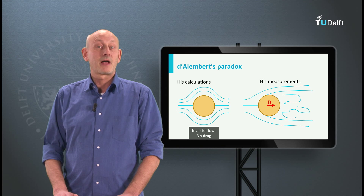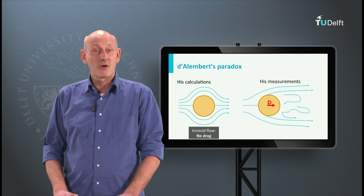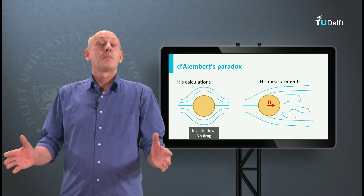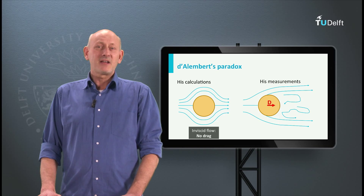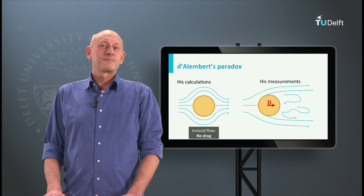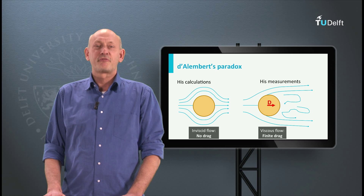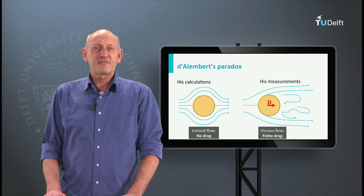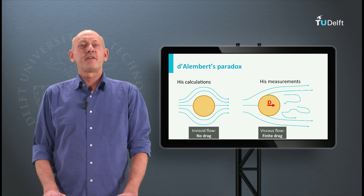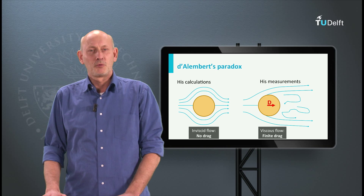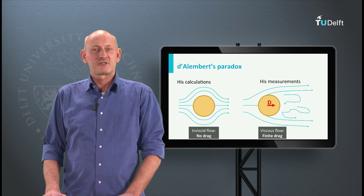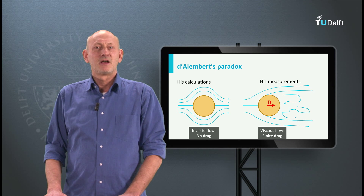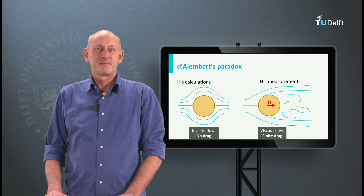So he knew that his calculations were wrong. But why? The answer is because of friction. The difference lies in a very thin layer of fluid that moves along the surface of an object affected by friction — the boundary layer.